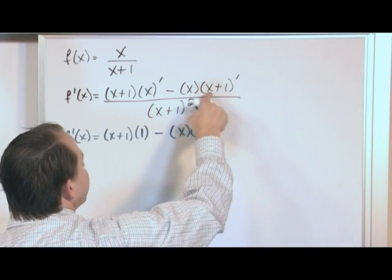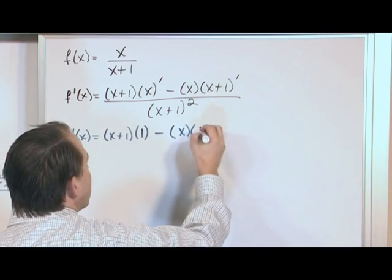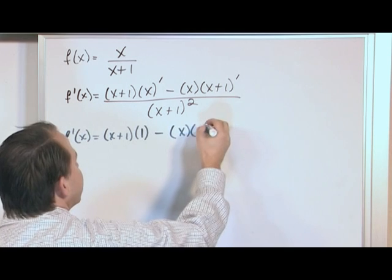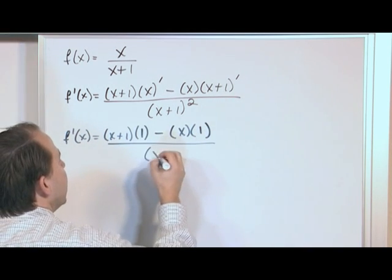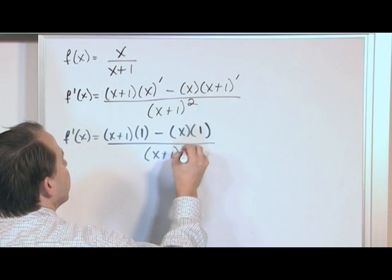What is the derivative of this term? Well, the derivative of x is just 1. The derivative of the constant is 0, so it's quite simplified there. And we'll divide by x plus 1 squared.